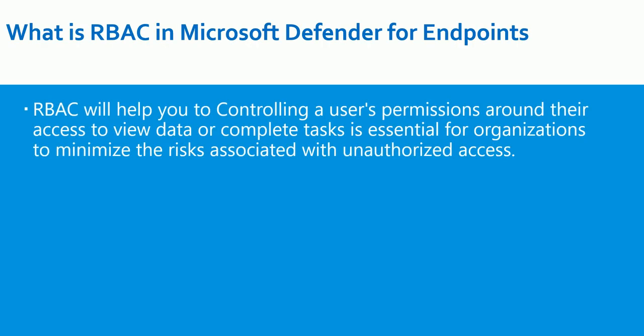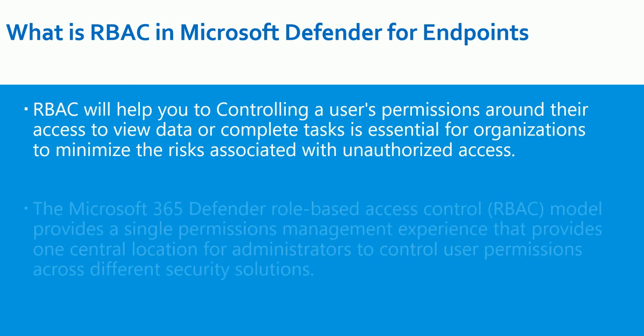RBAC helps you control user permissions around their access — to view data and complete tasks. It is essential for organizations to minimize the risk associated with unauthorized access. You should have RBAC in place to control access for your L1, L2, admin, and architect teams. All users should not have the same rights — L1 should have minimum rights, not full admin rights, to reduce unauthorized access risk.